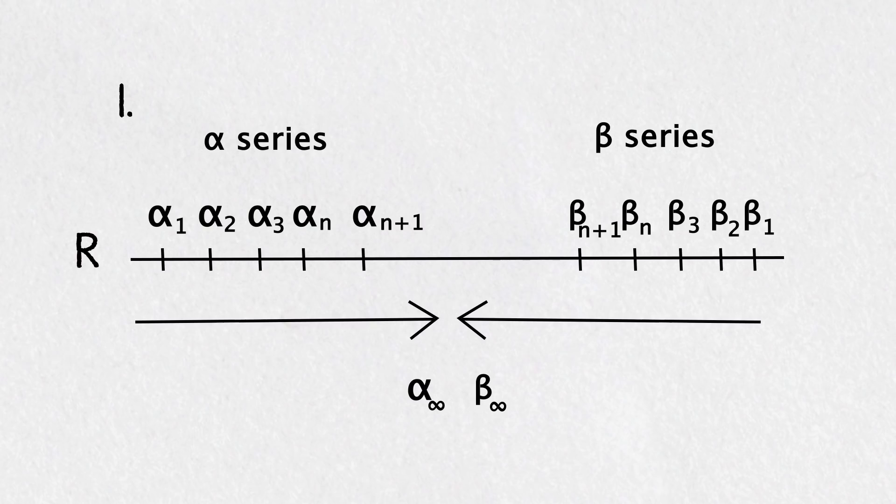Now these limits have to be the same number. If there were a gap between alpha infinity and beta infinity then there would be reals in between, for example alpha infinity plus beta infinity divided by two. So then the interval must converge to a point which means alpha infinity is equal to beta infinity. We'll call this number eta, the funny-looking n.